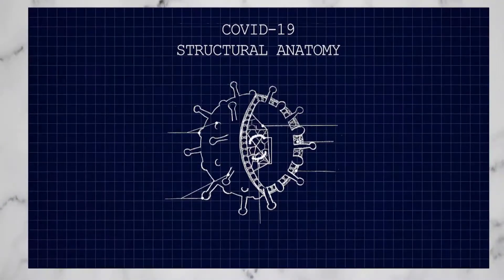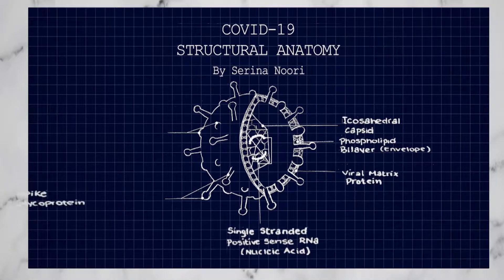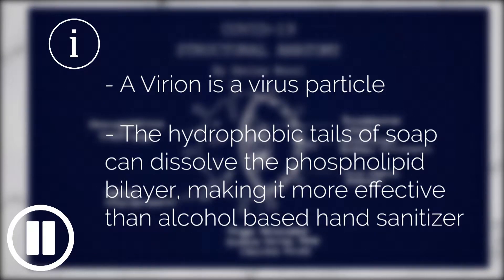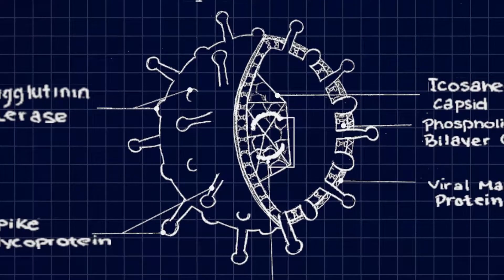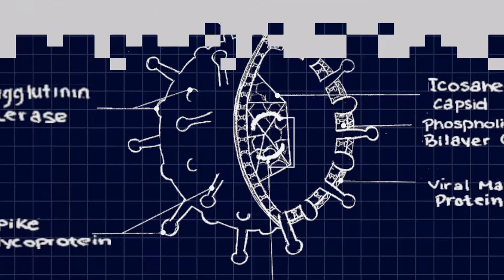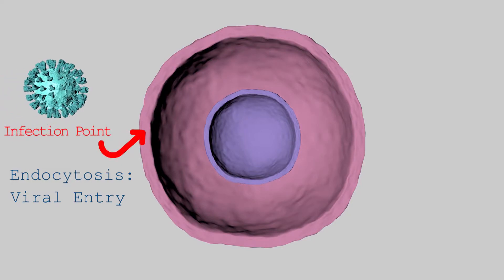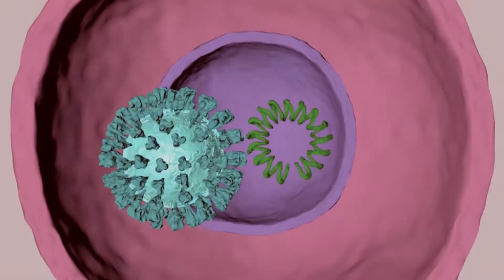Coronavirus variants have a phospholipid bilayer called an envelope, which is decorated with spike glycoproteins and hemagglutinin esterases on its exterior that hitch onto the host cell. Virions contain nucleic acid, which in this case is a single strand of positive-sense RNA. The RNA is encased by an icosahedral capsid which is encompassed by a viral matrix protein. The RNA hijacks the control center of the host cell through receptor-mediated endocytosis to incorporate itself by translating into messenger RNA, replicating in the cytoplasm.